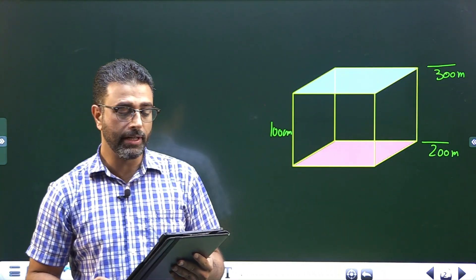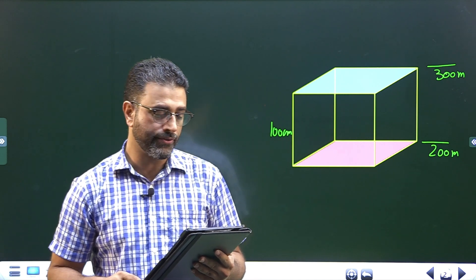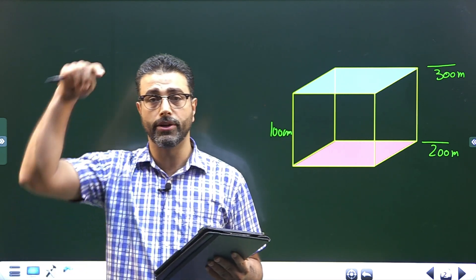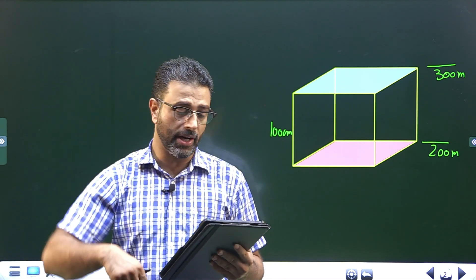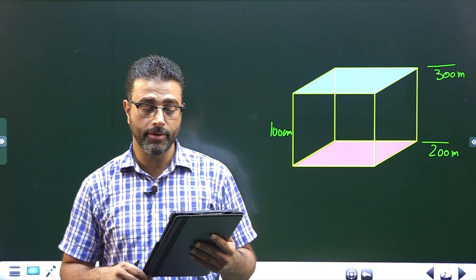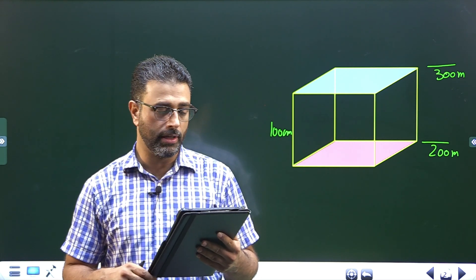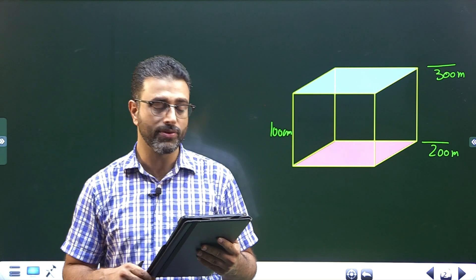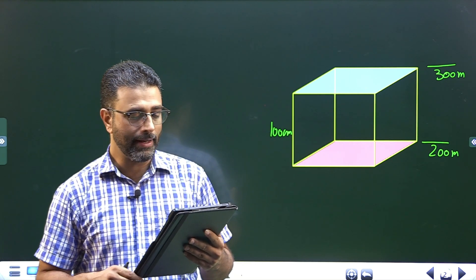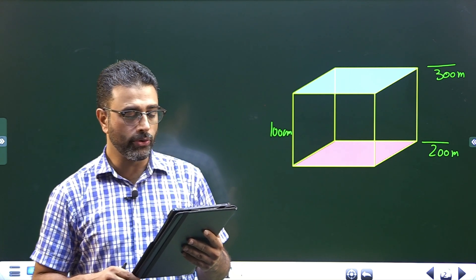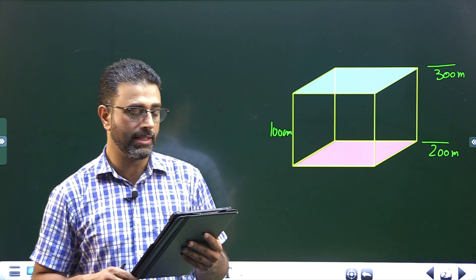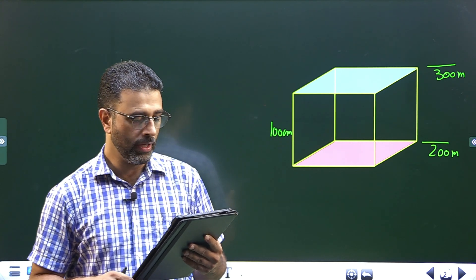The electric field in a certain region of Earth's atmosphere is directed vertically downward. At an altitude of 300 meters, the field has a magnitude of 60 newton per coulomb. And at an altitude of 200 meters, the magnitude is 100 newton per coulomb.